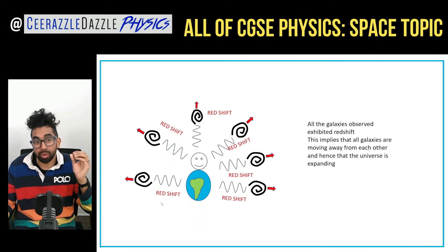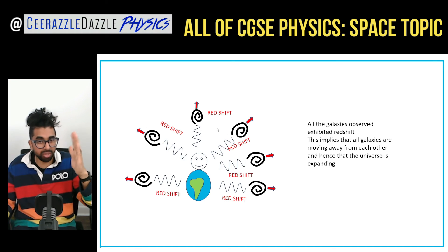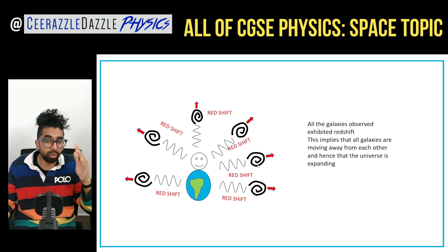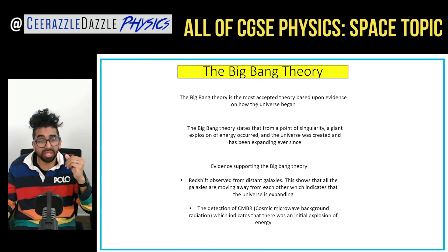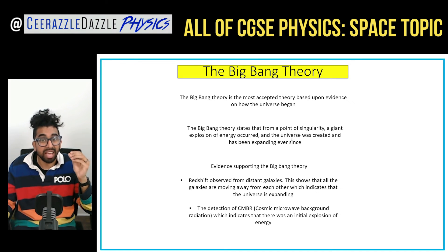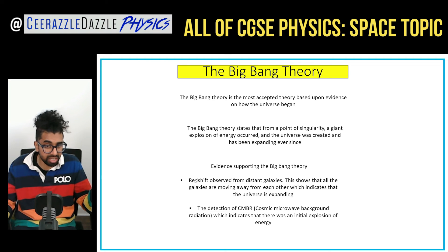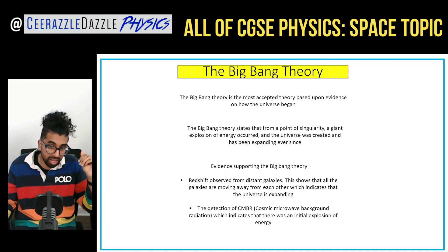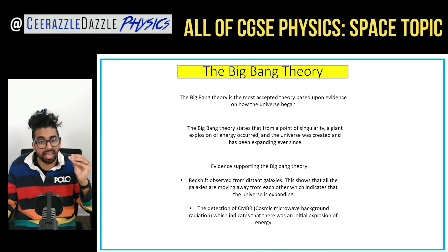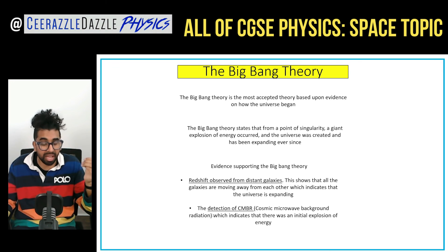What does red shift tell us about the universe? From Earth, every galaxy observed shows red shift, which tells us that all galaxies are moving away and therefore the universe is expanding. The Big Bang theory is the most accepted theory for how the universe began — it states that from one point of singularity, a giant explosion of energy occurred and the universe was created and has been expanding ever since. There are two types of evidence: first, red shift observed from distant galaxies shows the universe is expanding. Second, the detection of CMBR — cosmic microwave background radiation — which is the leftover radiation from the initial Big Bang.